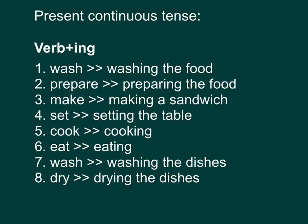Dry — 抹干，如果我们想讲抹干紧碗碟，我们就是将 dry 加 ing。Drying the dishes — 抹干紧碗碟。小朋友要留意：Prepare 如果变成现在进行式，prepare 最后这个 e 是没有了的，变成 preparing。另外 make (M-A-K-E)，make 加了 ing 之后，最后这个 e 都是没有了的，变成 making。